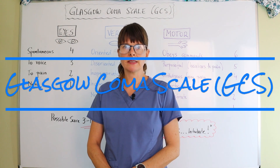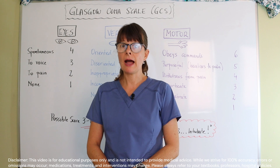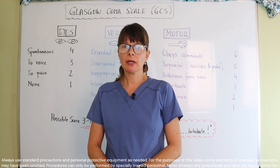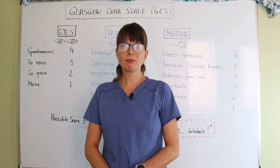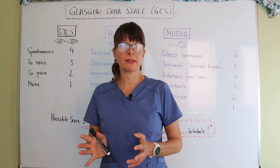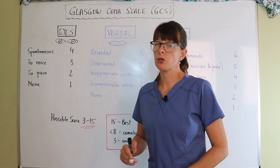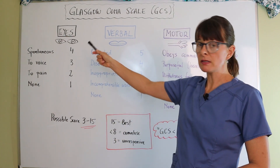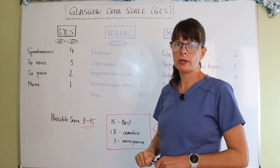Welcome to Nursing School Explained and this video on the Glasgow Coma Scale, which is an evaluation tool to help us determine the patient's mental status after a traumatic brain injury. It can also be used in other settings, such as after a stroke, but after traumatic head injury this is usually the gold standard. It's divided into three categories: eye response, verbal response, and motor response, and we give them a number.